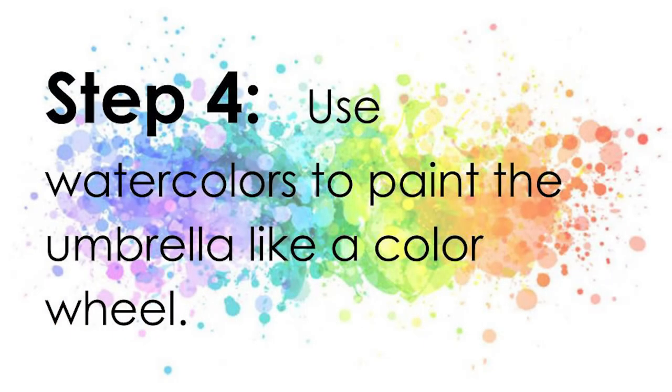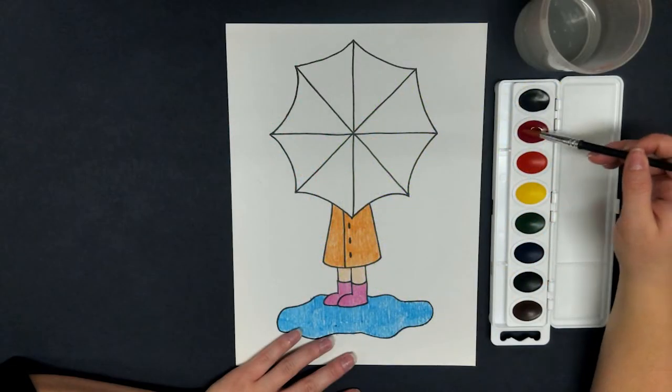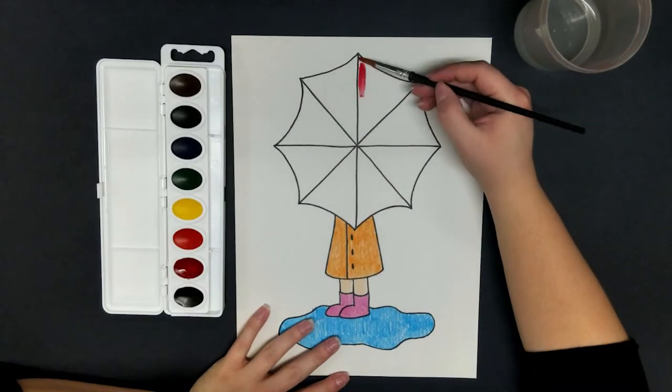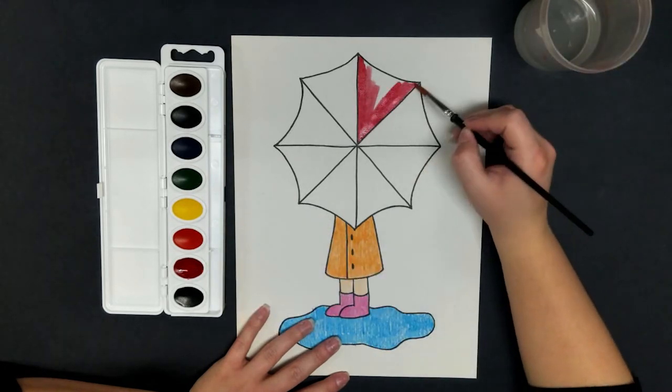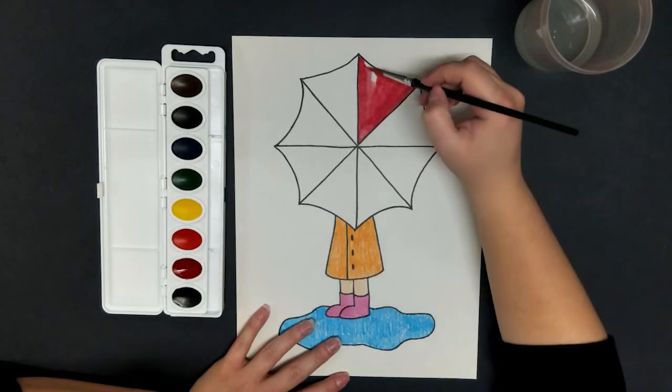In step four, we're going to use watercolors to paint our umbrella. For this, we are simply painting each triangle a different color, but making sure to follow the color wheel.